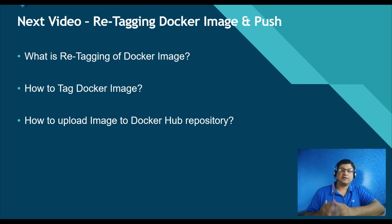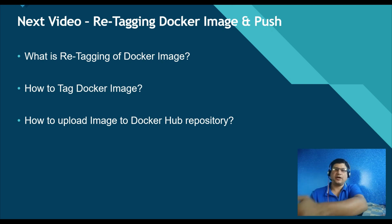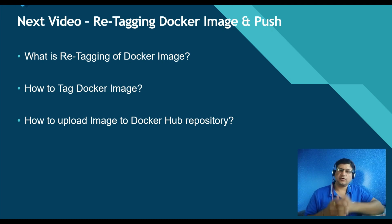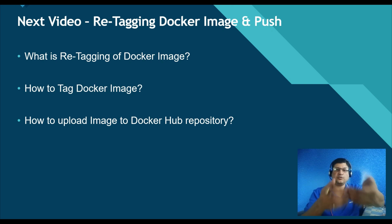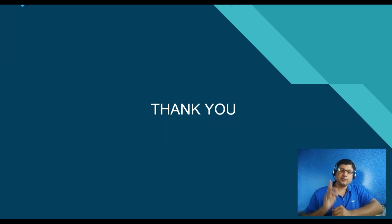In the next video I will cover another Docker topic: how to re-tag an image. Just creating an image locally is not going to help anybody. To deploy in production on cloud — AWS, Azure, GCP, or any other cloud — you need to upload your image to a global repository like Docker Hub or a cloud registry. We'll cover the purpose of re-tagging, different ways to re-tag, and how to push from a local repository to Docker Hub.